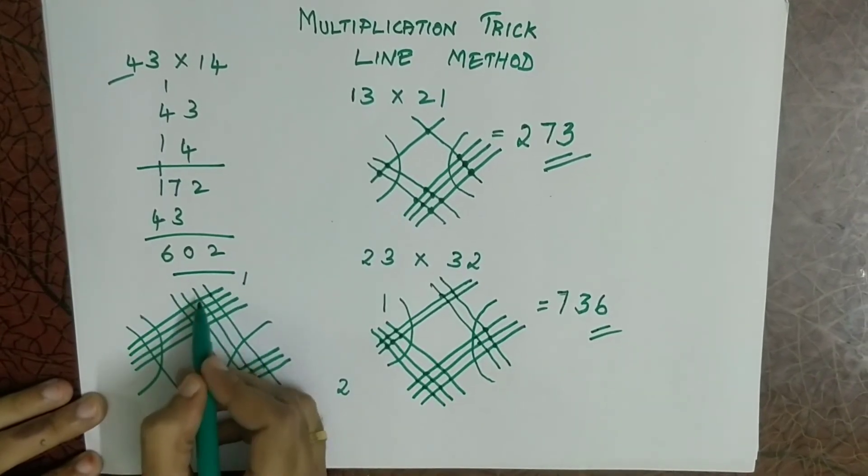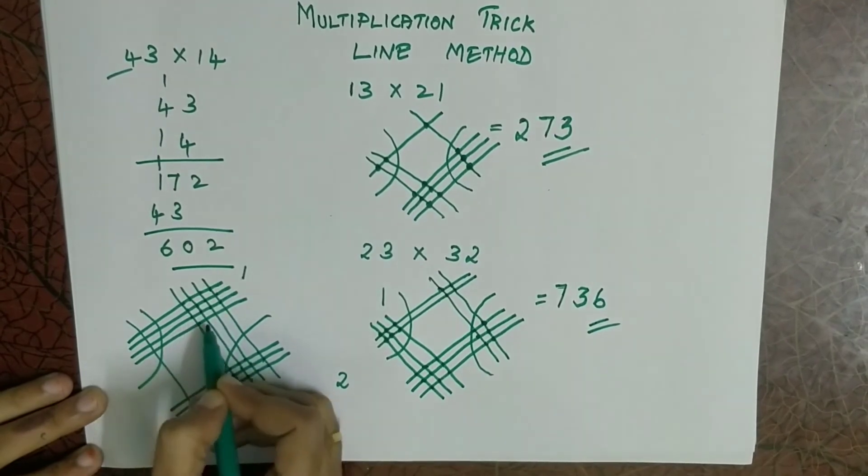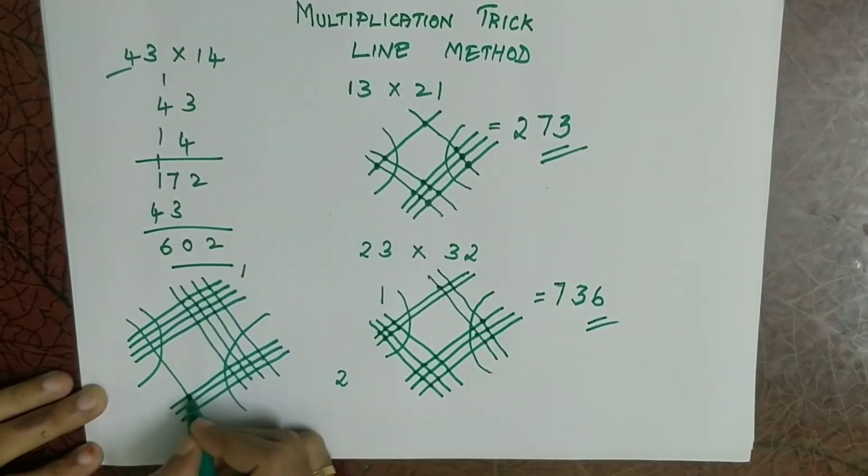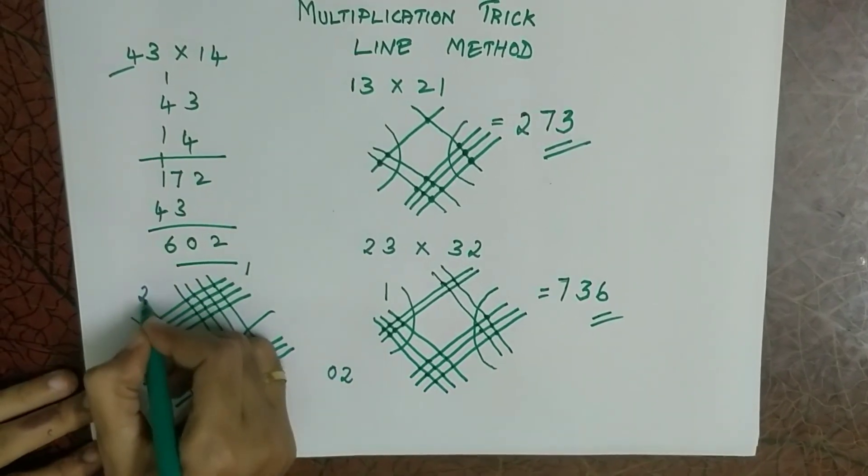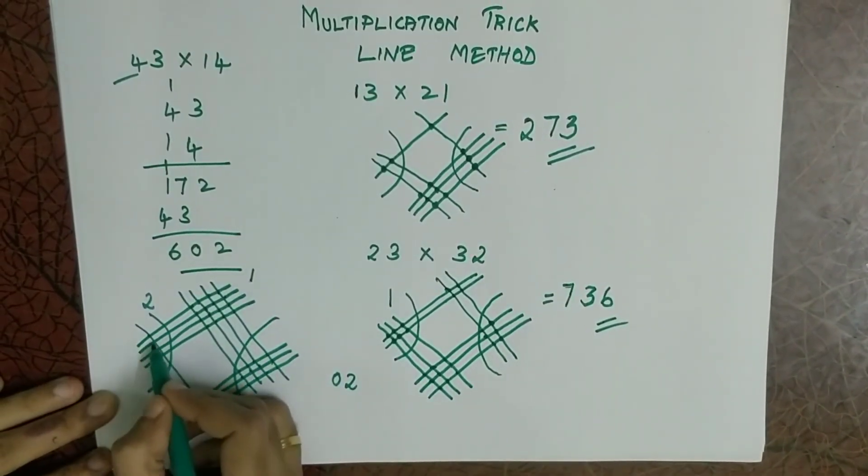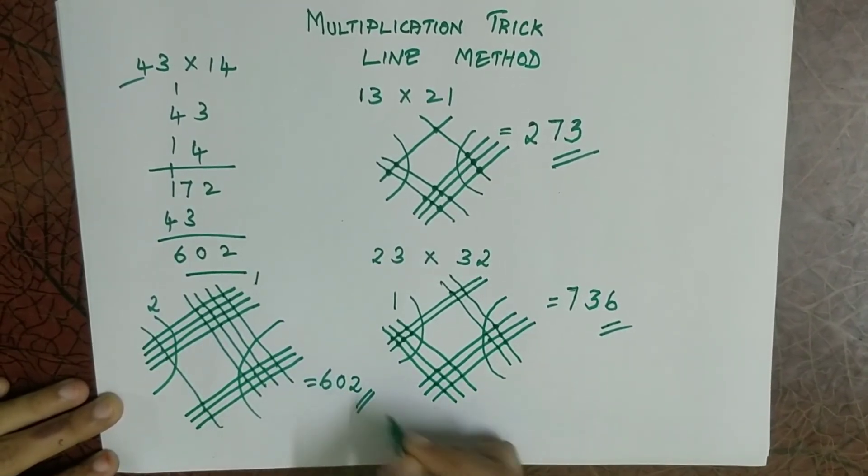So 1, 2, 3, 4, 5, 6, 7, 8, 9, 10, 11, 12, 13, 14, 15, 16, 17, 18, 19 and 20. So 0 here and 2 here. So 1, 2, 3, 4 and 6. So the answer is 602.